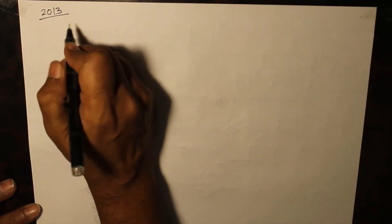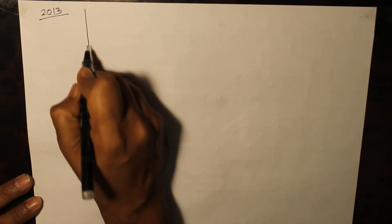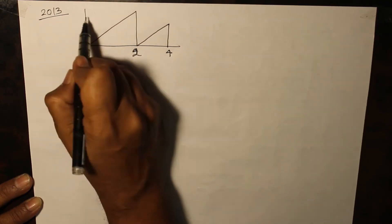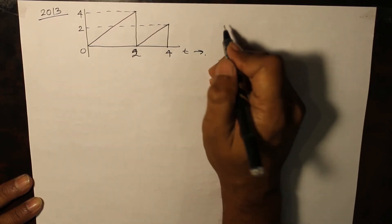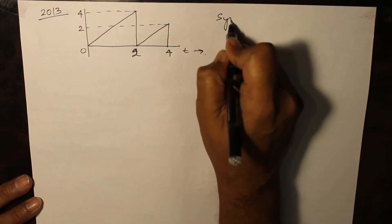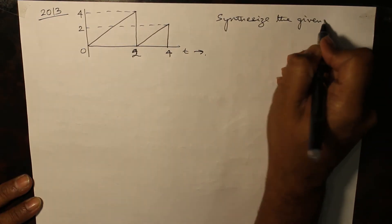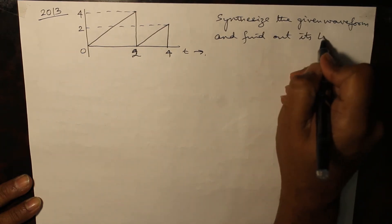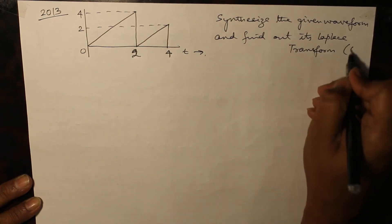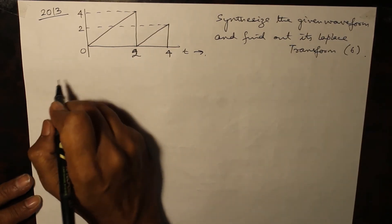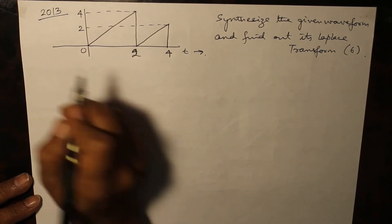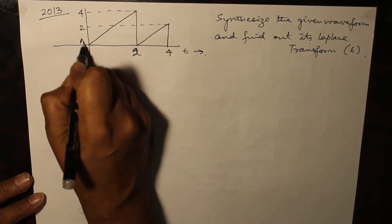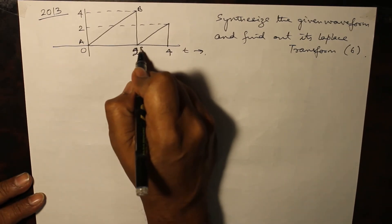In 2013 in IP University there was a question which asked: synthesize the given waveform and find out its Laplace transform. It was a six-mark question. Now using gate signal, the first and foremost thing is we have to write down the equations of the lines — equation of line AB and equation of line CD.